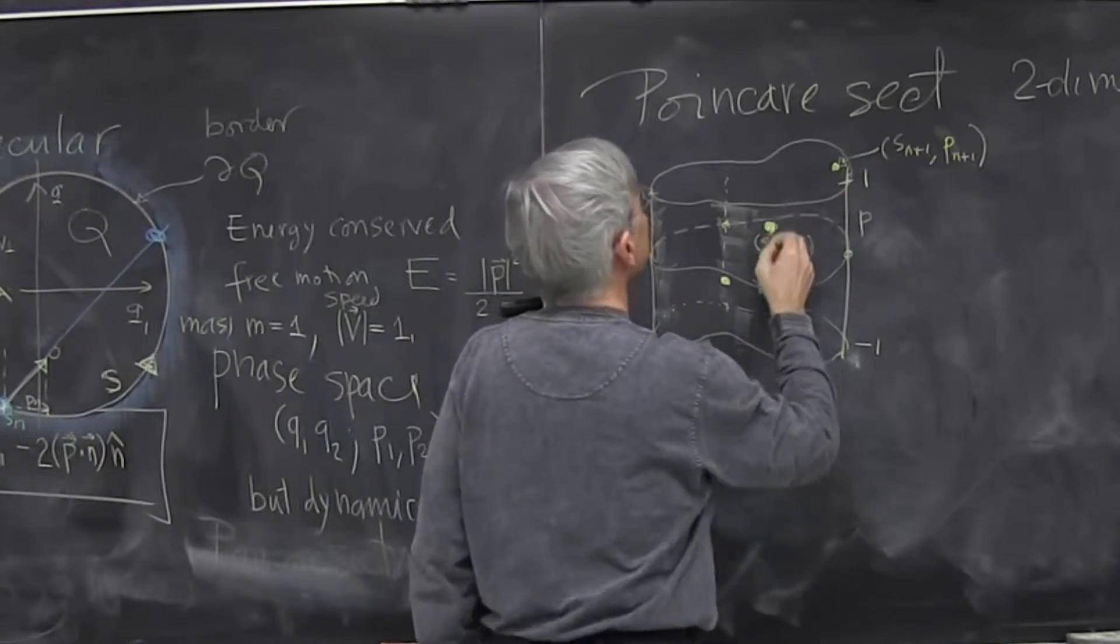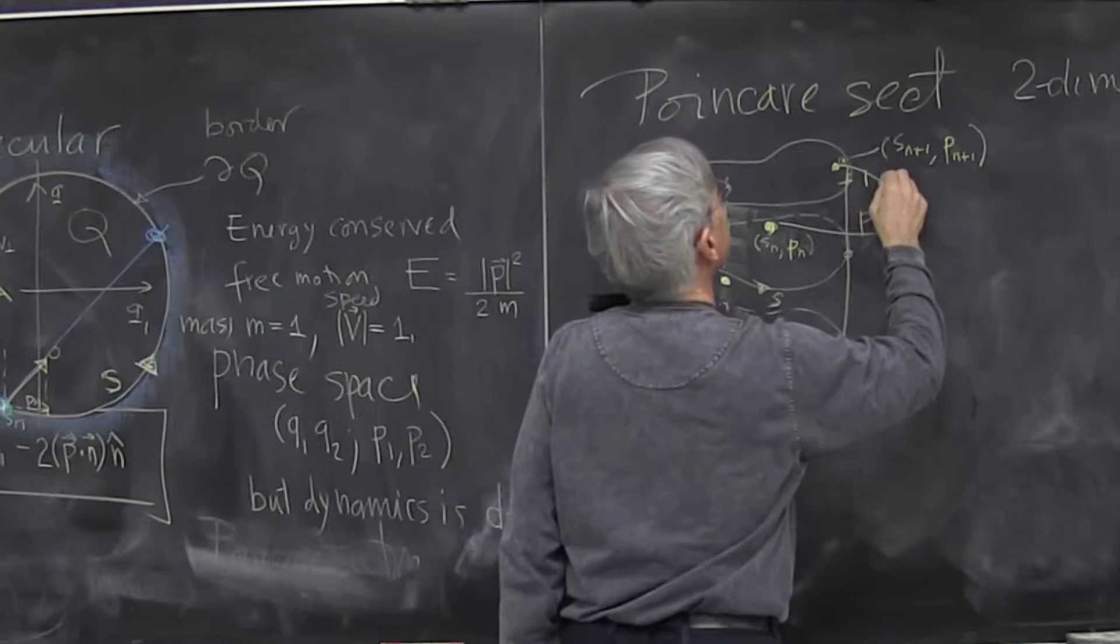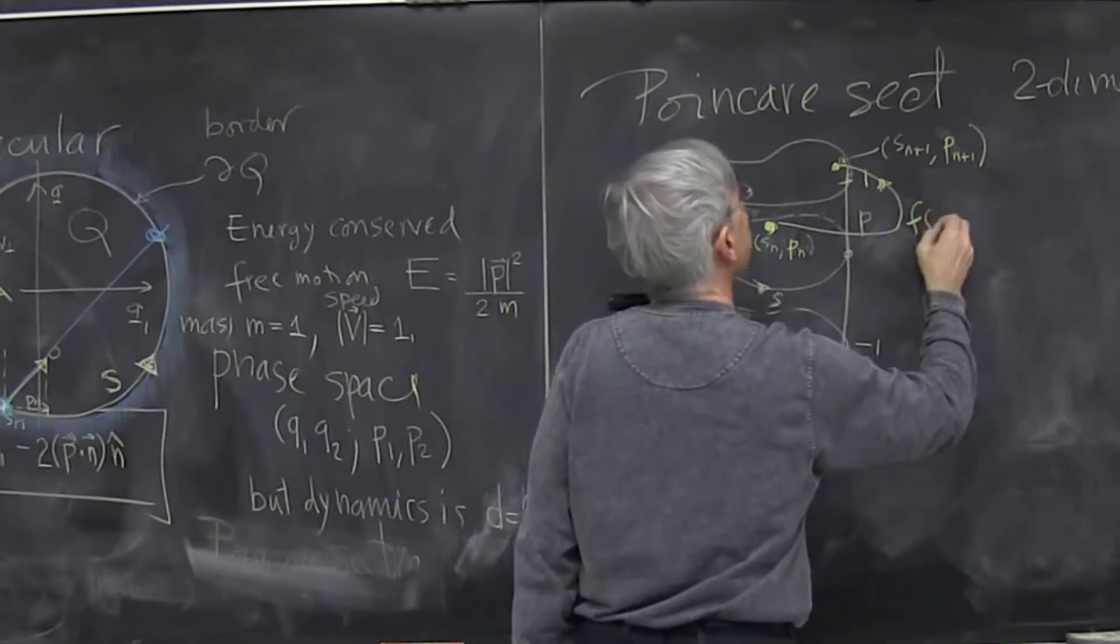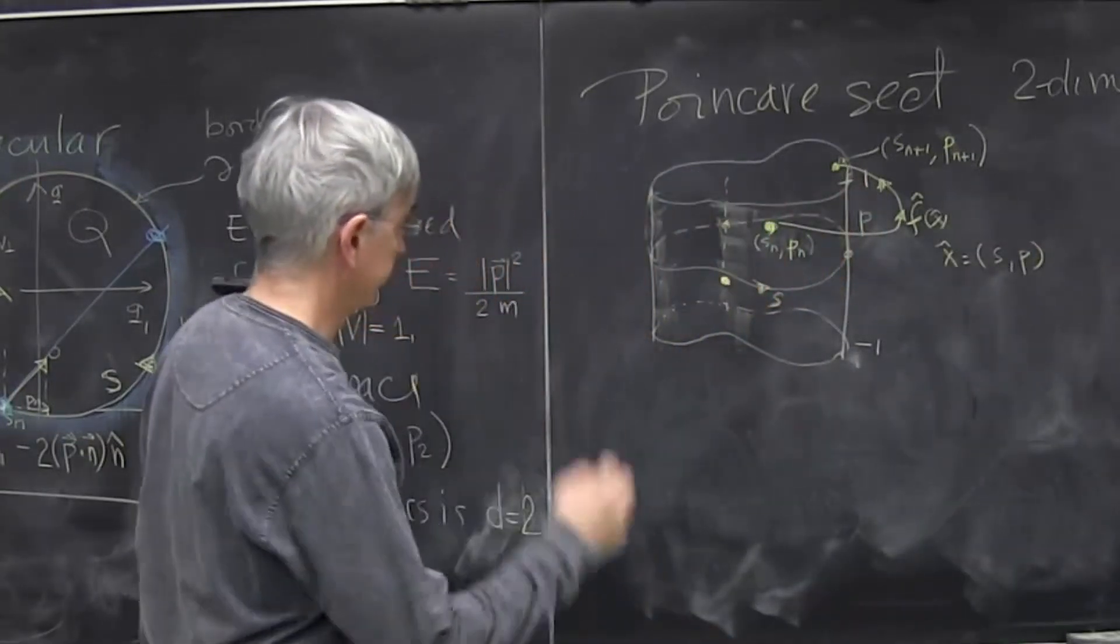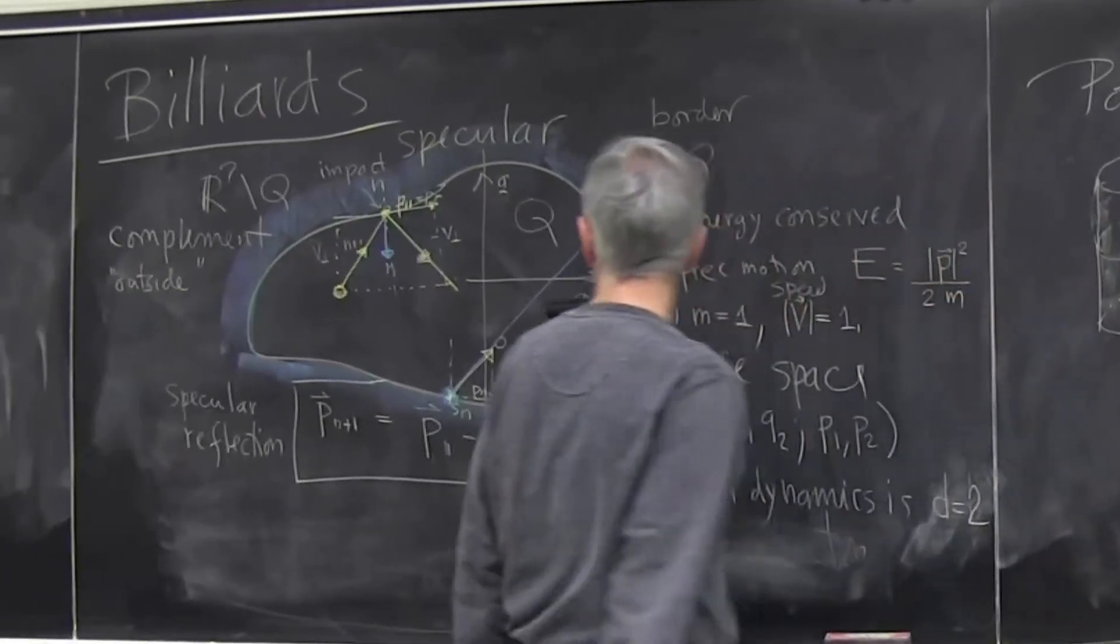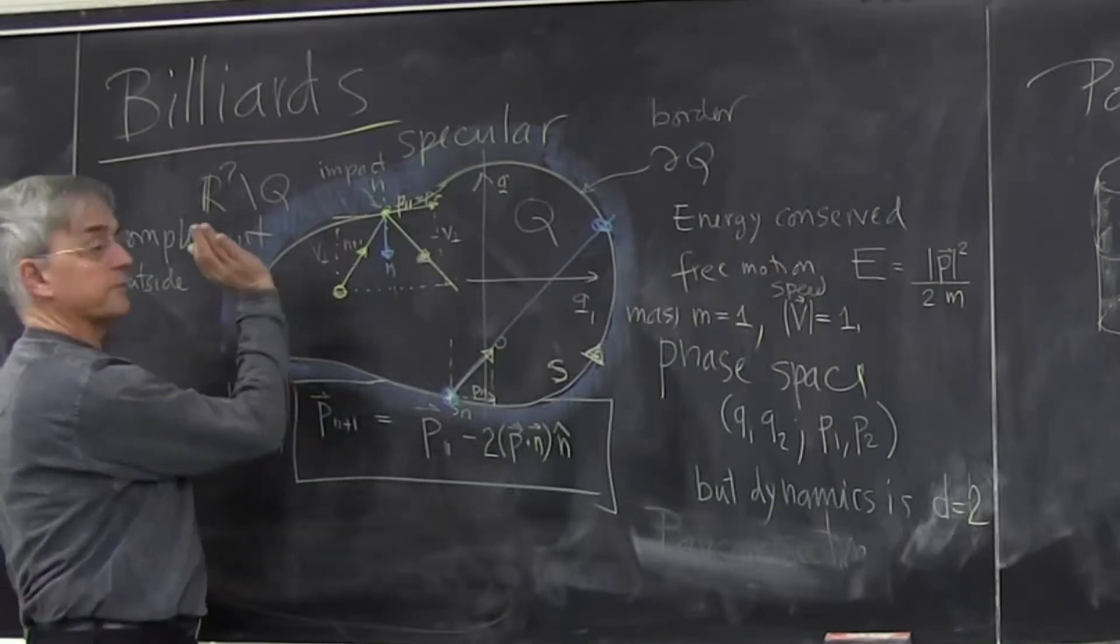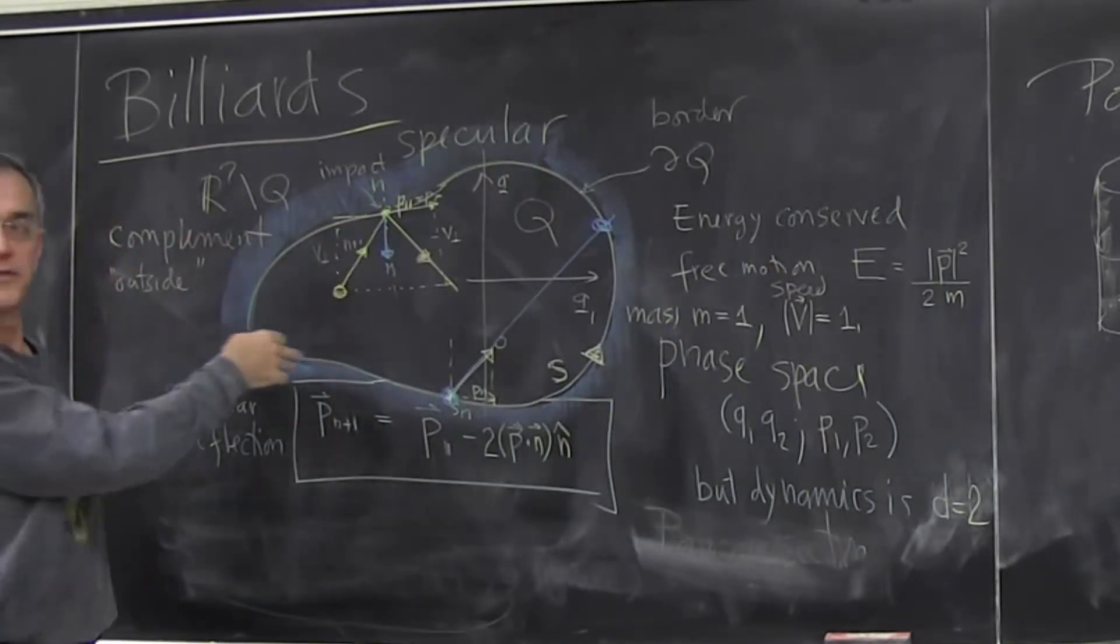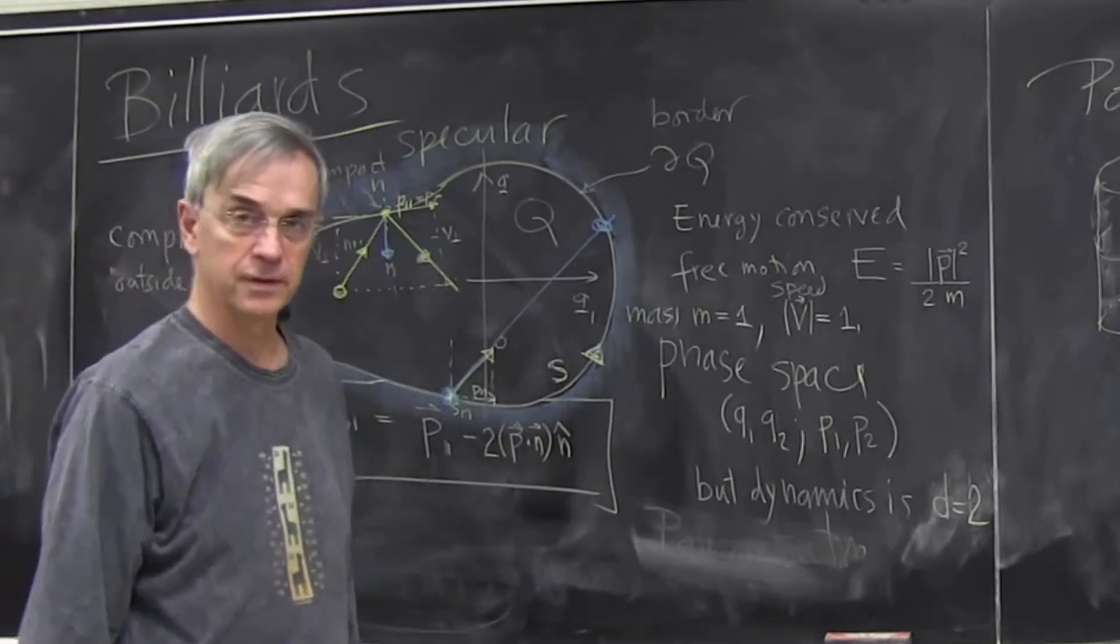So I start here, and my dynamical systems map F going one step forward, Poincare section coordinate parallel momentum. So position. The vertical axis is the parallel momentum, and I draw the weird shape because I just put the second coordinate out of the board, and then I turn it a little bit sideways for your pleasure to watch it.